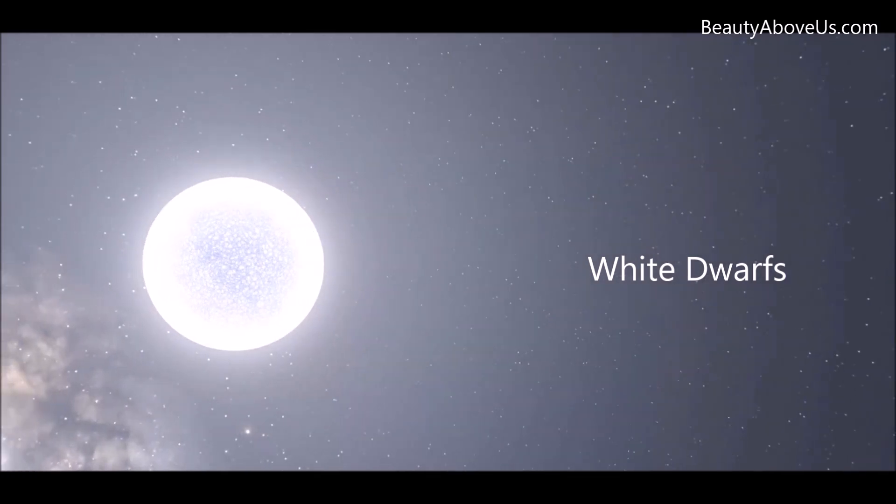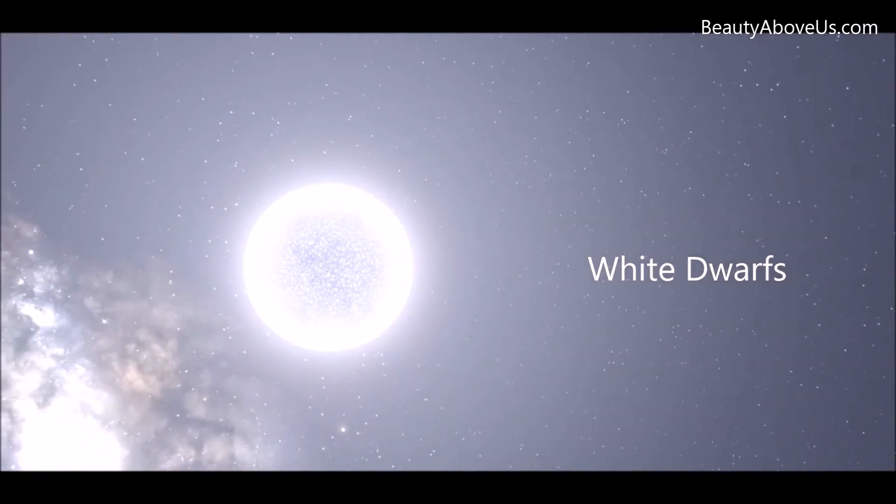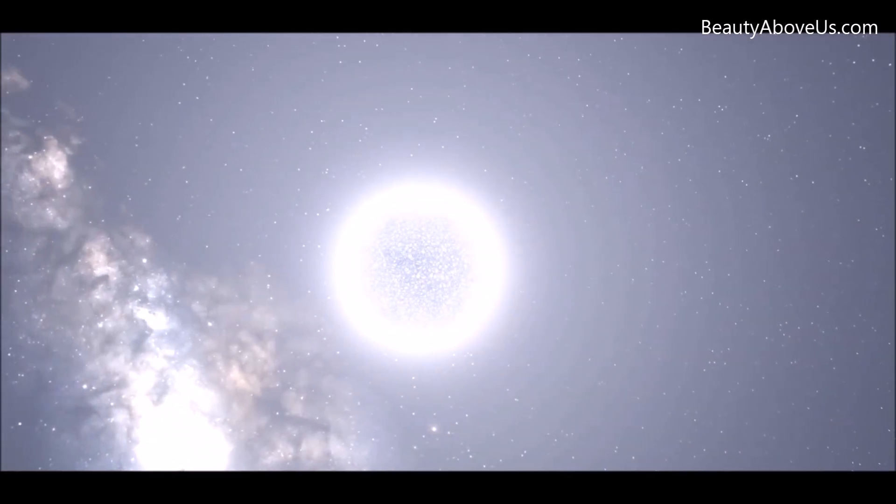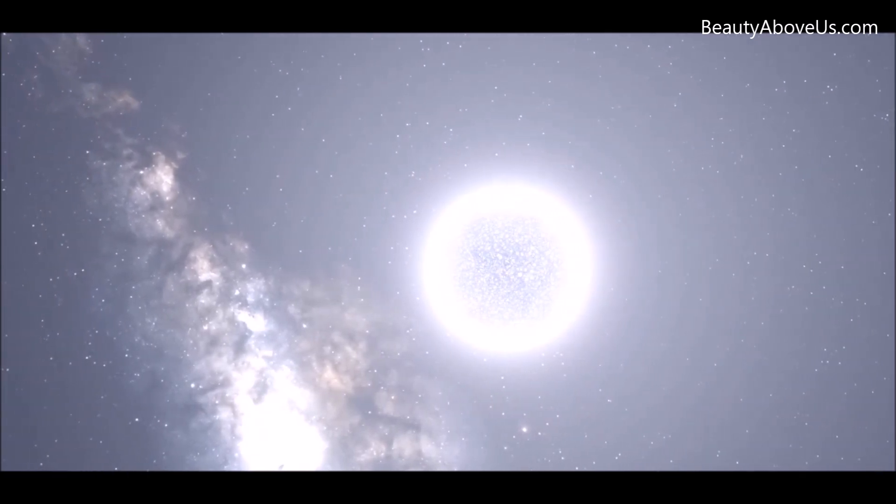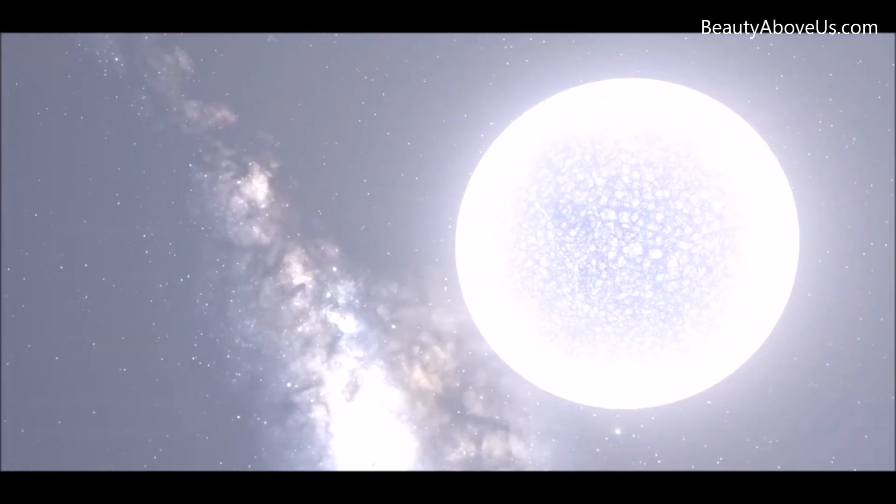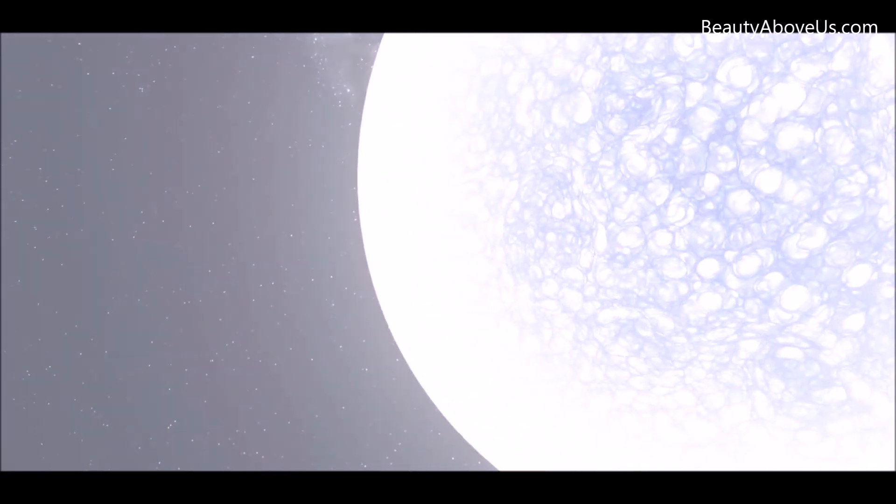White dwarfs. Stars less than 10 solar masses will shed their outer layers to form planetary nebulae. They will typically leave behind an earth-sized core of less than 1.4 solar masses.